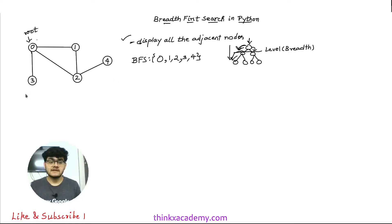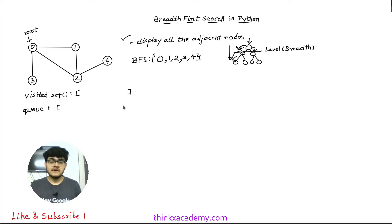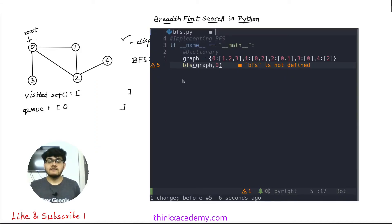Now let's see how to implement this in Python. The first thing is we are going to create a visited array using the set function, which is initially empty. This visited array will store all nodes we have traversed. The second thing is we are going to use a queue data structure. Queues are used for BFS because it is a very feasible data structure for this scenario. Initially the queue will hold only one element — zero, the root element.